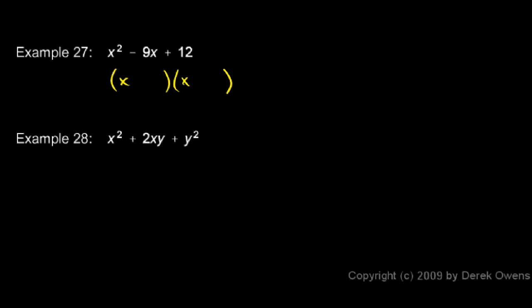So let's see, could we do x minus 6 and x minus 2? Those two numbers will multiply to give me a positive 12, but they add up to negative 8, not negative 9, so that won't work.